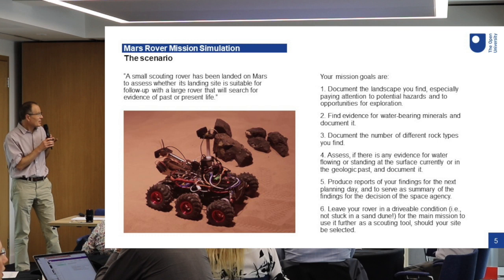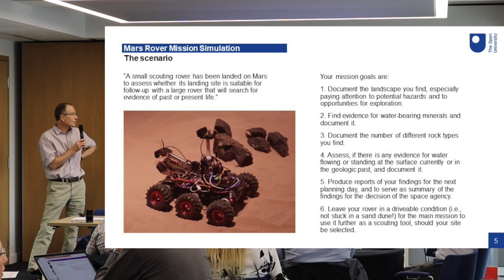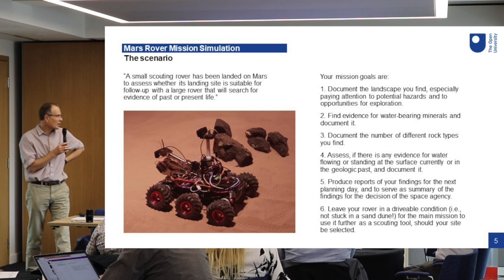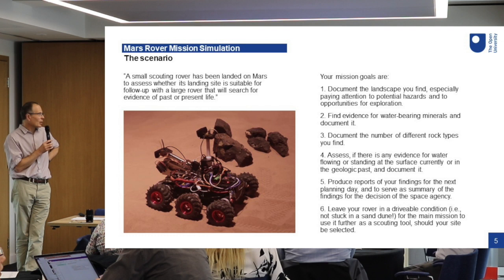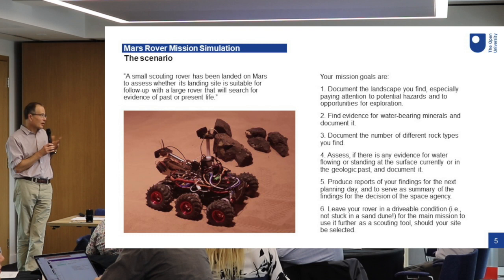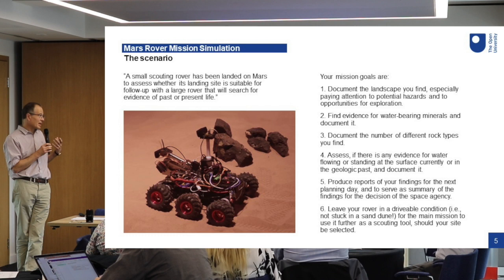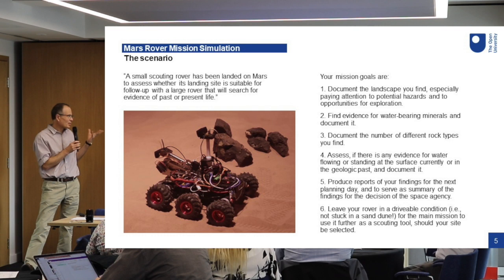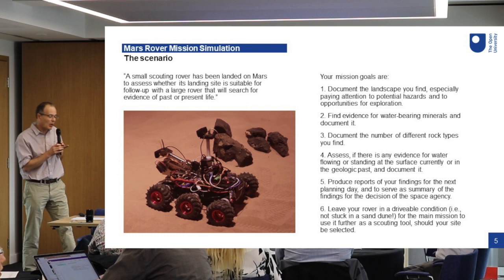So what do we have? We've got our rover, and we give the students this scenario. We tell them that this scouting rover has been landed on Mars, and the scenario is that it's a precursor to a larger mission that will follow, and that larger mission will be looking for evidence of past or present life. Some of the important mission goals are: documenting what they find in the landscape, looking for evidence of water-bearing minerals, looking at different types of rocks, looking for water, producing reports as they go along, and leaving the rover in a driveable condition. That last one is really important, because this is a real physical yard with a real robotic rover — there are real hazards, and you can get the rover stuck or damage it if you drive it improperly.